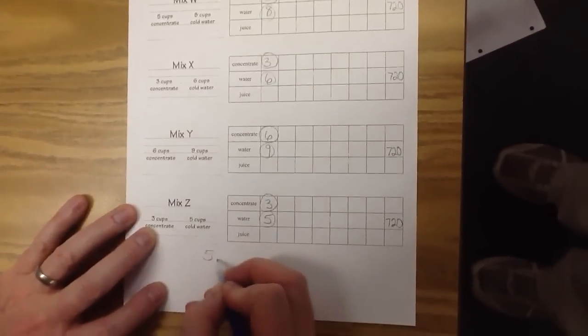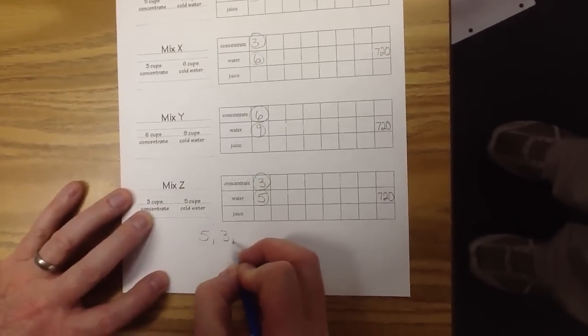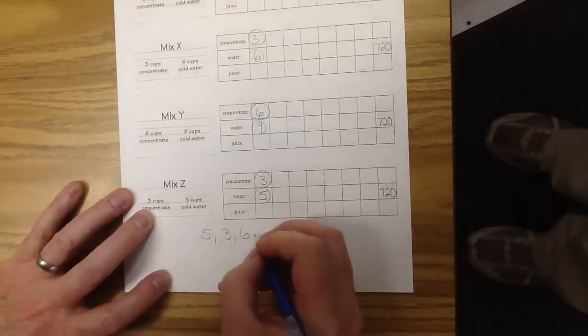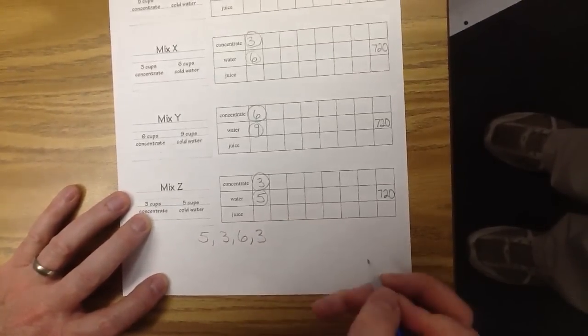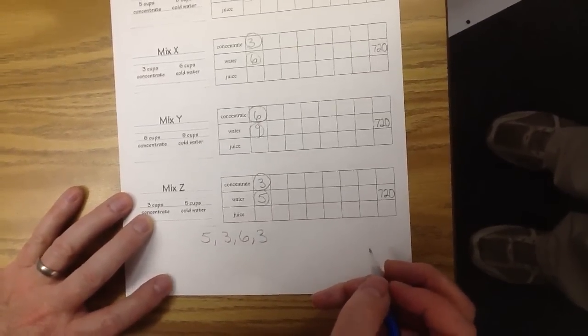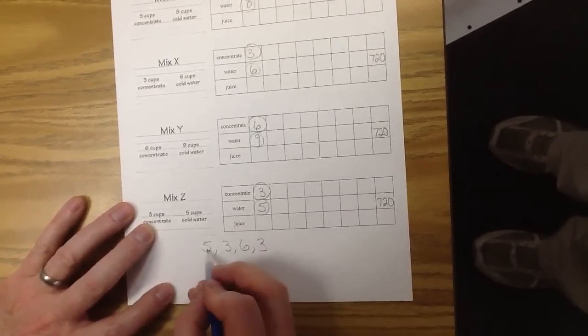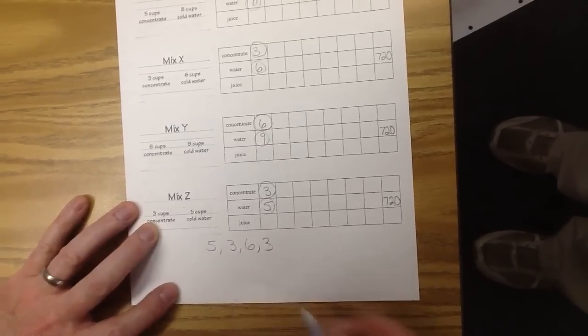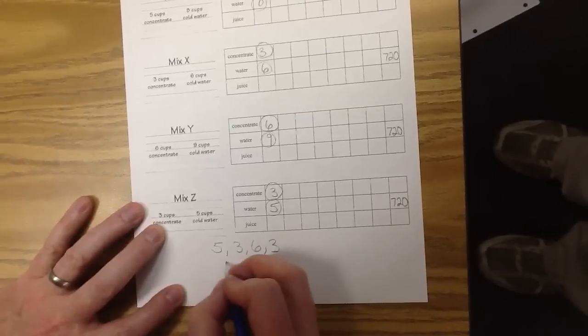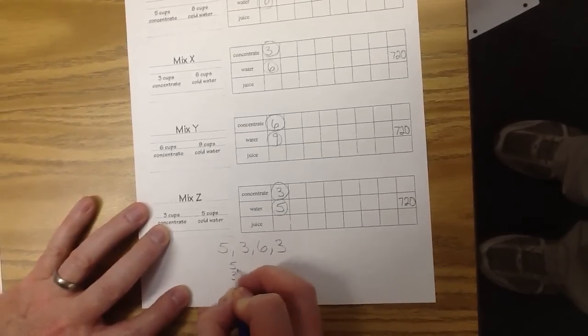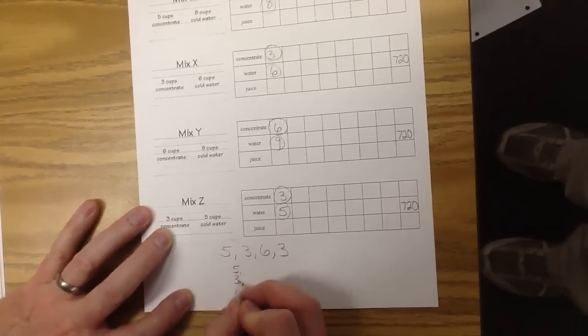Maybe we can find a much smaller LCM for all of those numbers. We need to find the least common multiple of 5, 3, 6, and 3. If you don't remember how to do that, just start listing your multiples of 5, 3, and 6.